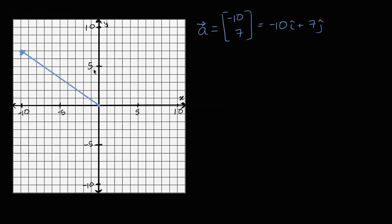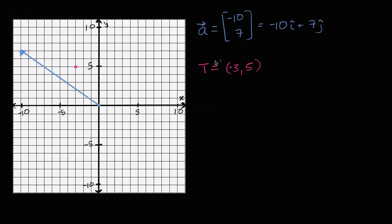But let's say we wanted to move the vector — we wanted it to have a different terminal point. Instead of the terminal point being (-10, 7), let's say it had the terminal point negative three comma five. So we could imagine what the vector would look like there. We would just translate this vector over, so the tip of the vector would terminate at (-3, 5), and it would start someplace in this area. Let's figure it out mathematically — what would be the initial point of vector a if the terminal point is negative three comma five?